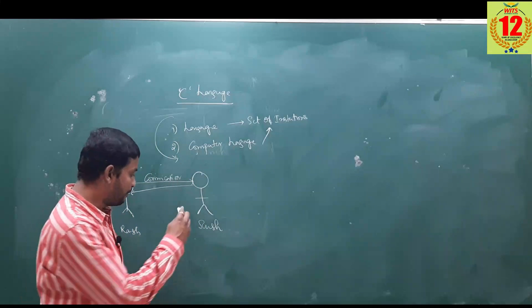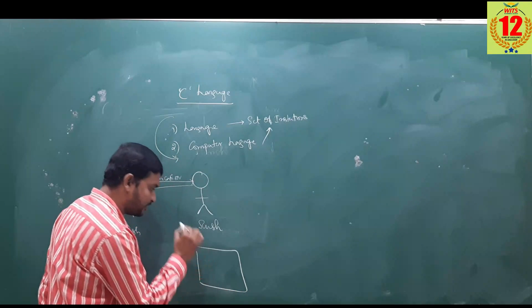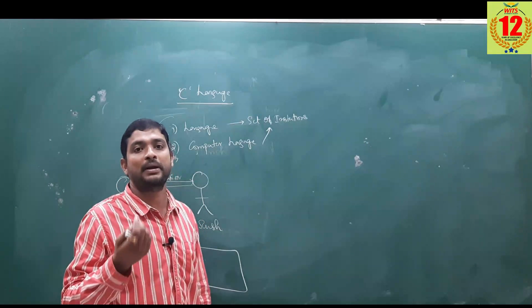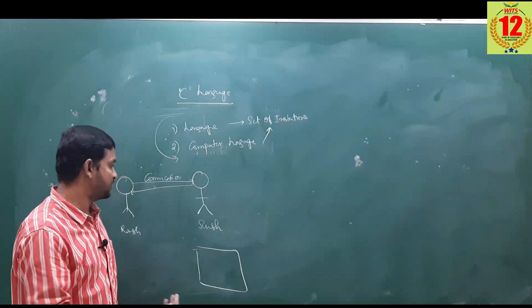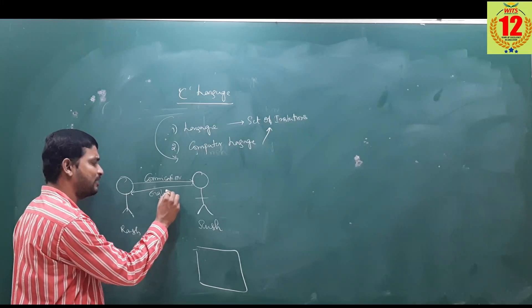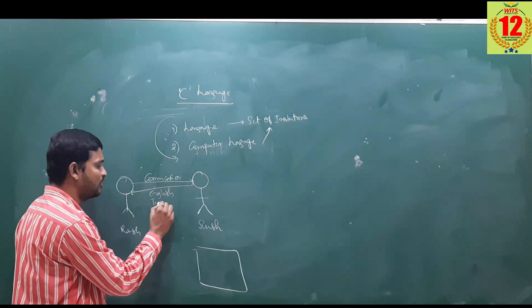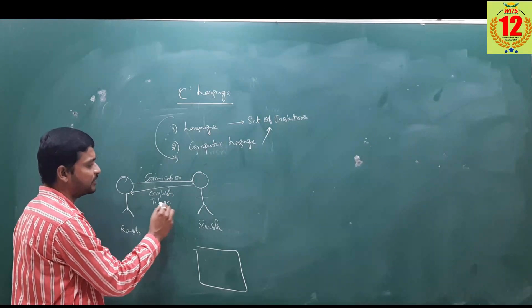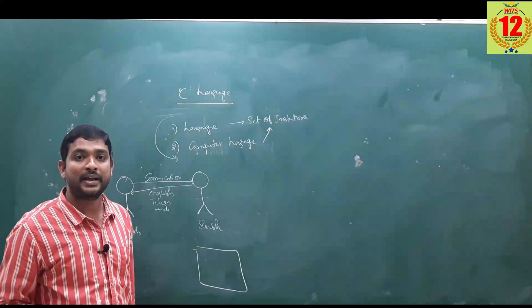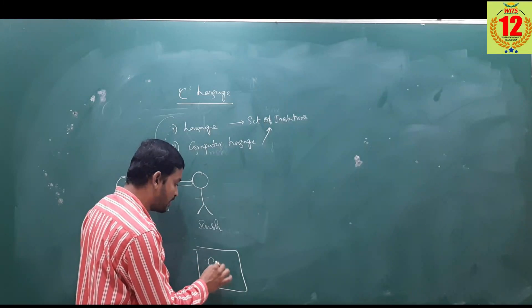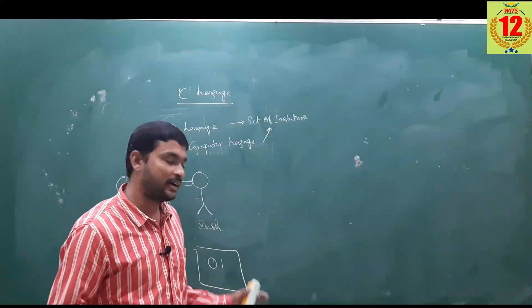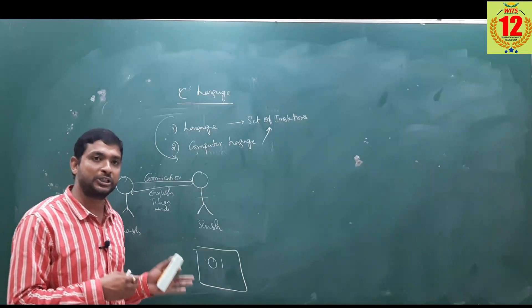For these two members to communicate, we need a language. Similarly, in computing, we take the computer. Human persons normally communicate using some language — it can be English, Telugu, or Hindi. Whatever language is used, the computer system can be communicated only through binary code. Binary code consists of zeros and ones, and zeros and ones are called machine code.